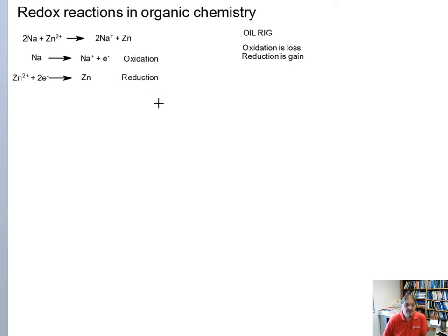This is also a really simple example because we could probably even look at the charge. Sodium going from neutral to positive charge, that's going to be oxidation. Zinc going from positive charge to neutral has to gain electrons. But in complex redox reactions, it might not be as obvious and you would have to work out the entire half reaction to figure it out.